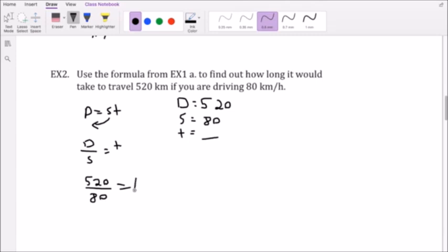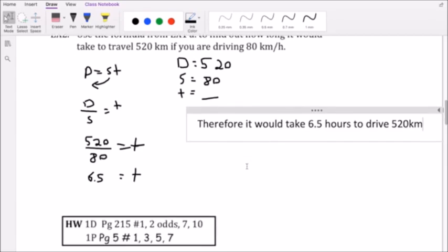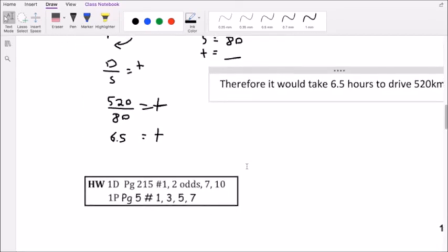Equals t. 520 divided by 80 equals 6.5. To get my full marks, I'll write a little therefore statement. Therefore, it would take 6.5 hours to drive 520 kilometers. Perfect, so that is half of today's lesson.